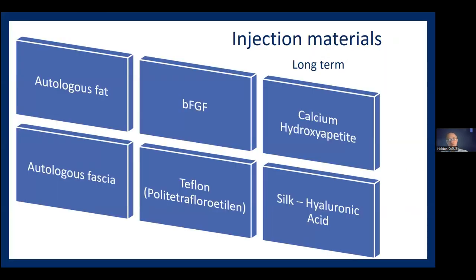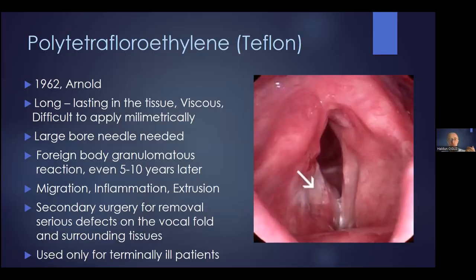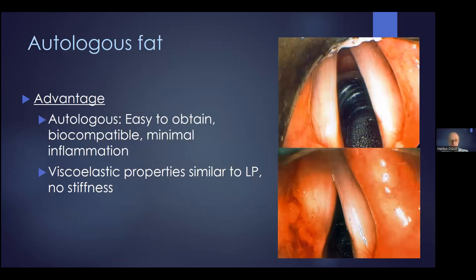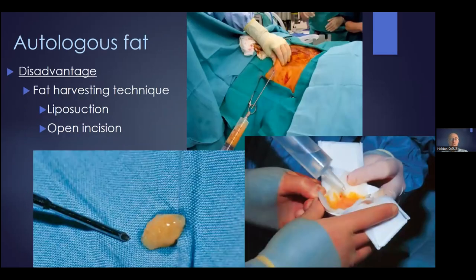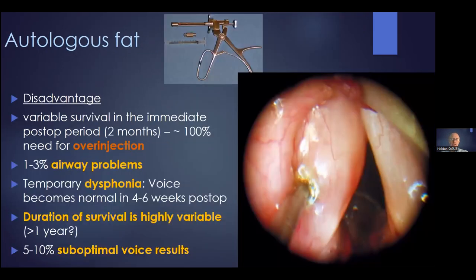For longer-term materials, there are different options. The most commonly used one in previous years was Teflon, which we nearly never use nowadays because it leads to granulomatous reactions. The most commonly used long-term material still in use is autologous fat, which is advantageous because it is easy to obtain, biocompatible, leads to minimal inflammation, and its viscoelastic properties are similar to lamina propria. Its disadvantage is that you need to harvest it from a donor site using liposuction or open incision. The duration of survival is highly variable among patients and tissue types, there is always a need for over-injection, and this may lead to dysphonia and airway problems in the early days.